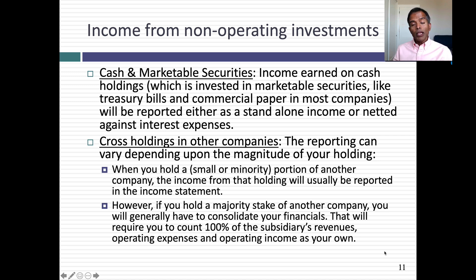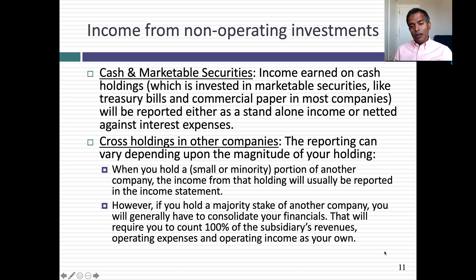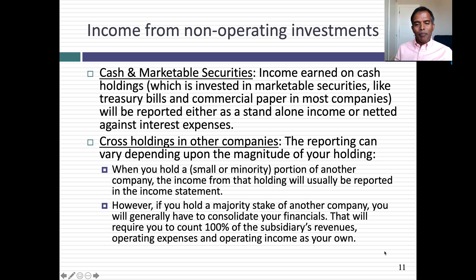If you own 55 or 60 percent of another company, you have a majority holding, and accounting requires you to consolidate. Here's what that means: you act as if you own the entire company. You count 100% of that subsidiary's revenues and operating income as your own. Then you record the portion of the company that doesn't belong to you on the balance sheet. If you own more than 50 percent — a majority stake — you have to consolidate.